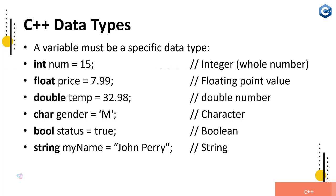Second is float, like price with the value 7.99. There is a decimal point, a floating point value. Next is double - temp is a variable for temperature, 32.98. It's a decimal point value stored for double number, which looks very similar to float. What is the difference between these two? In the next slide I'll clarify.